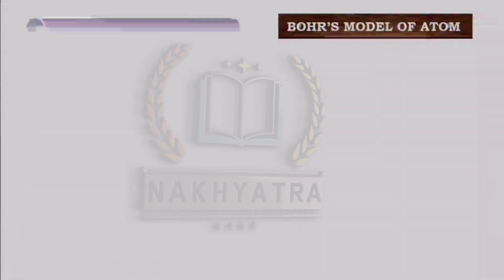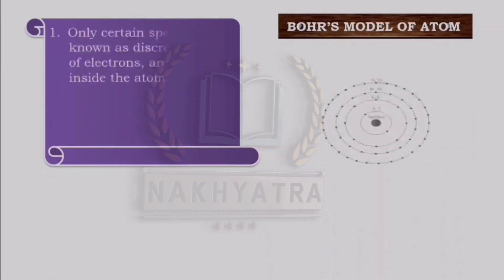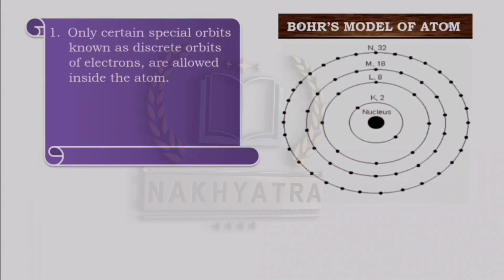In order to overcome the objections raised against Rutherford's model of the atom, Niels Bohr put forward the following postulates. The first postulate is: only certain spatial orbits, known as discrete orbits of electrons, are allowed inside the atom. Inside the atom, only these discrete orbits of electrons are permitted.